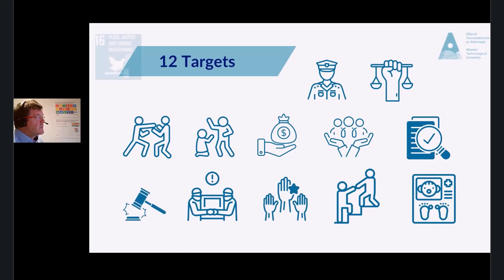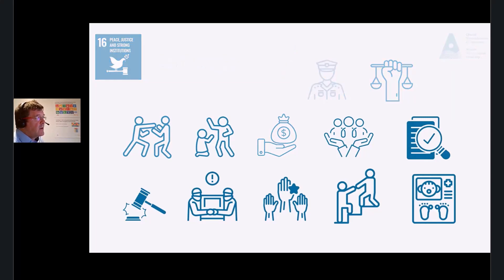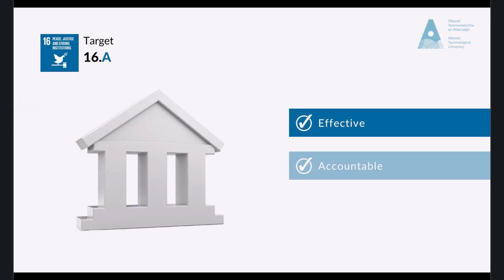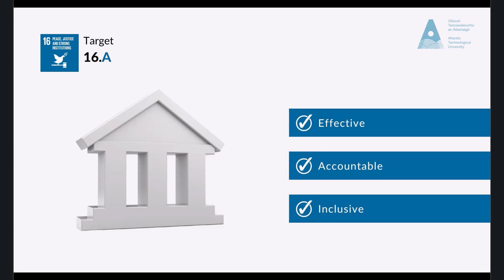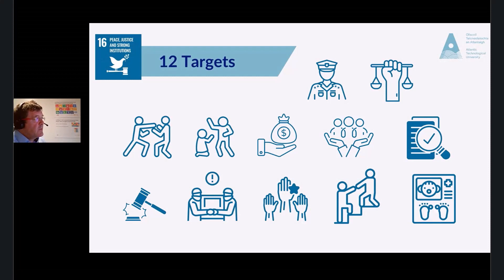So there we have 12 targets — all very important and fundamental if we want to have a peaceful, equitable society going forward. This SDG is all about promoting peaceful and inclusive societies for sustainable development, providing access to justice for all, and building effective, accountable and inclusive institutions at all levels. These aspirations ring out in modern-day Ireland as well as being global aspirations. Effective, accountable and inclusive — three very important words when we talk about governance. Globally, to do this, we need cooperation. How can we really have equality if we have an inequitable justice system?